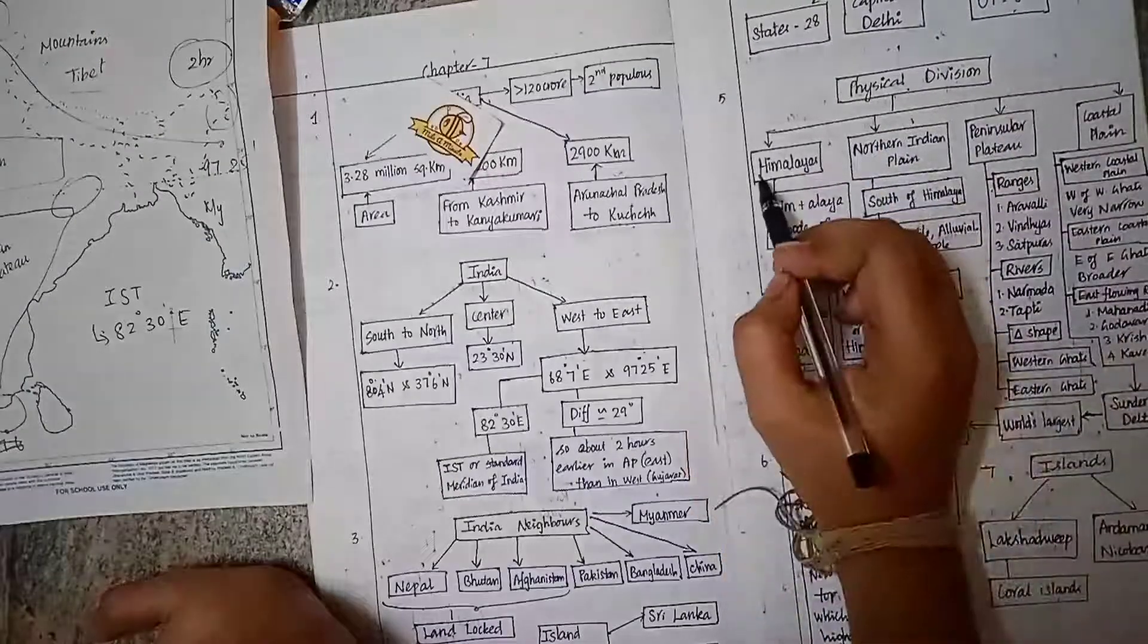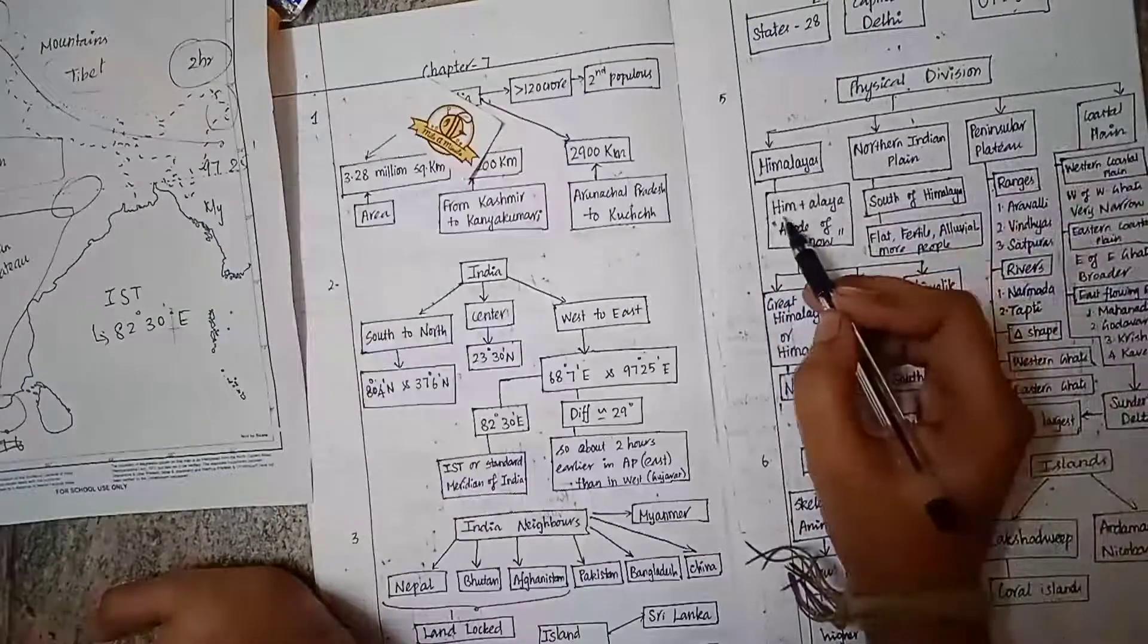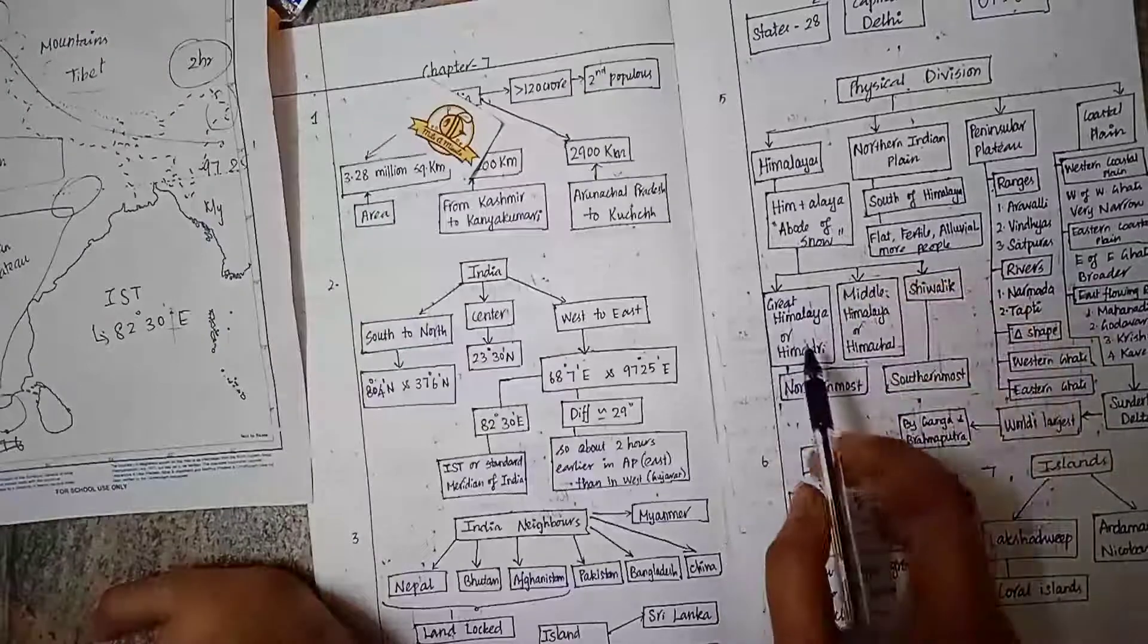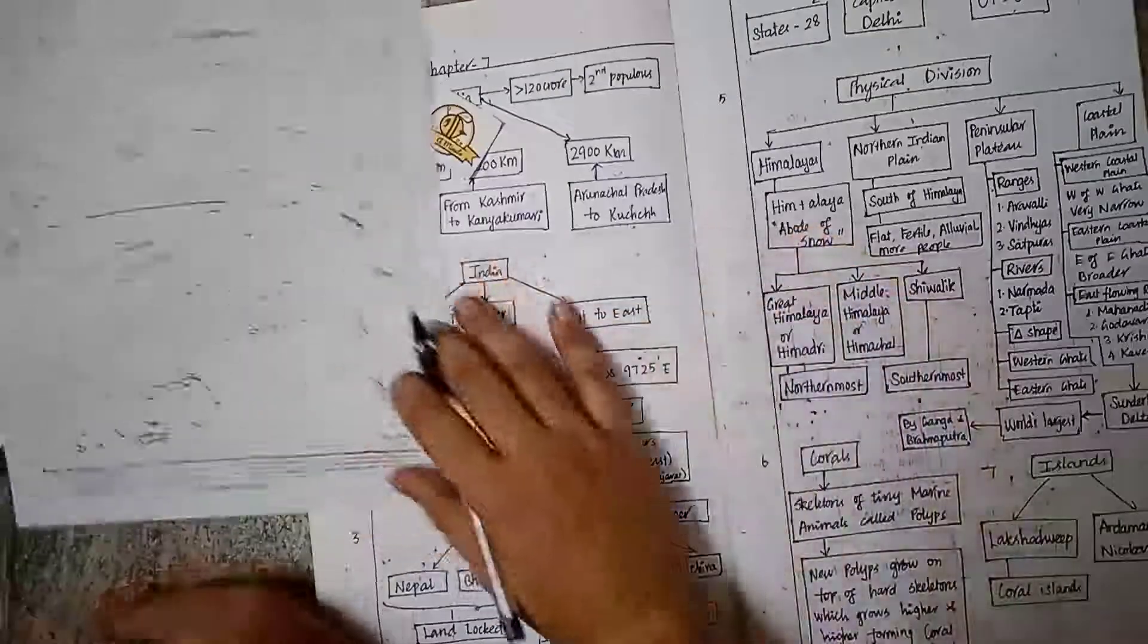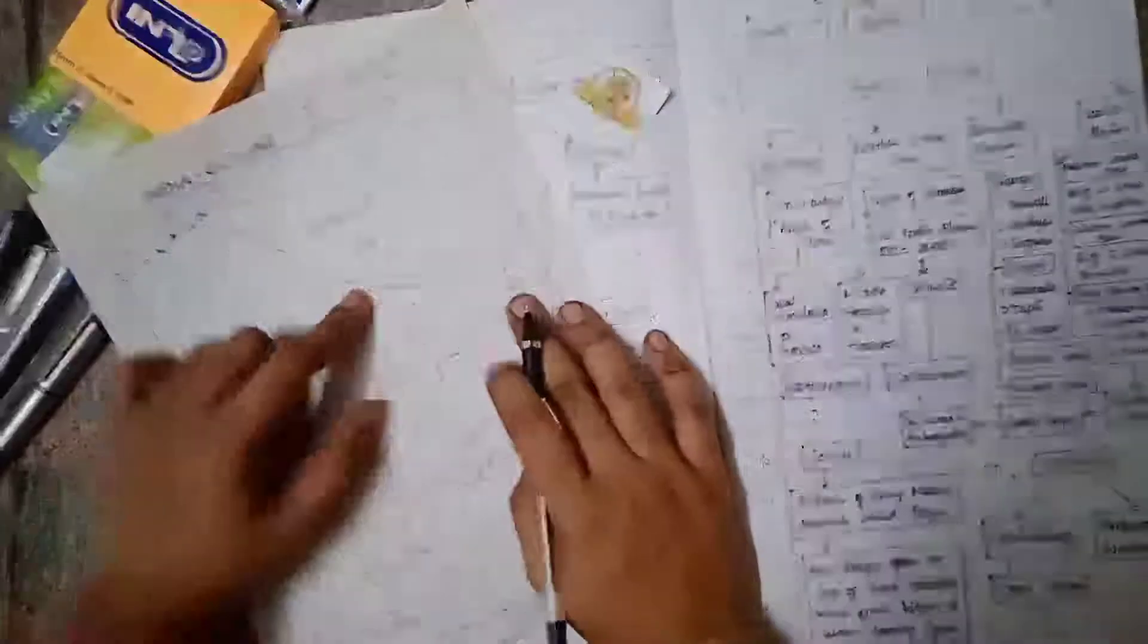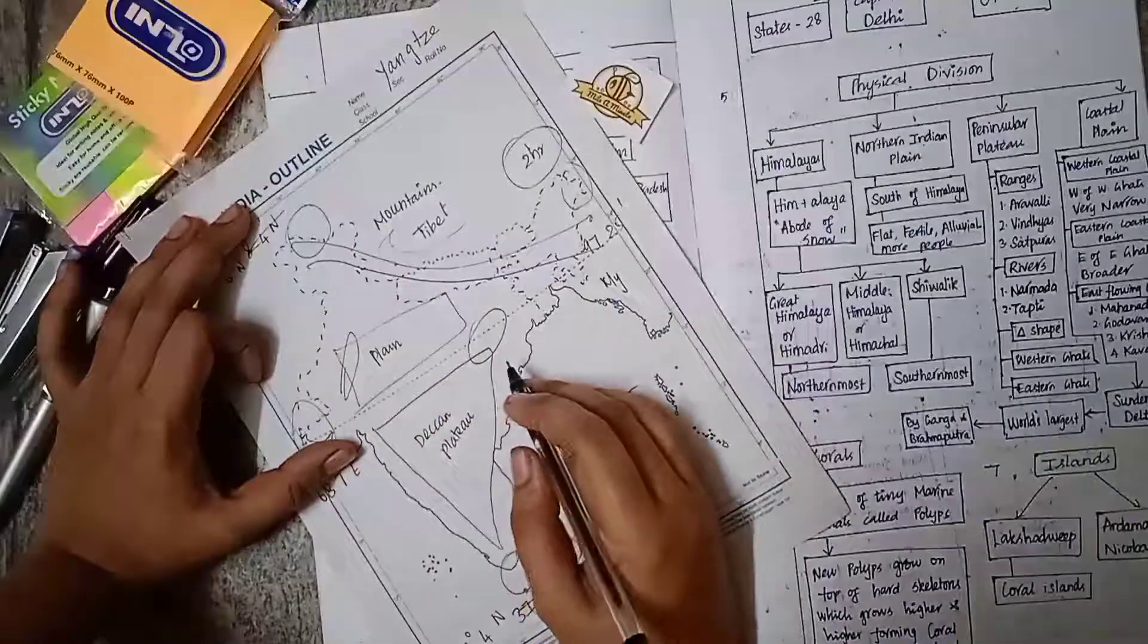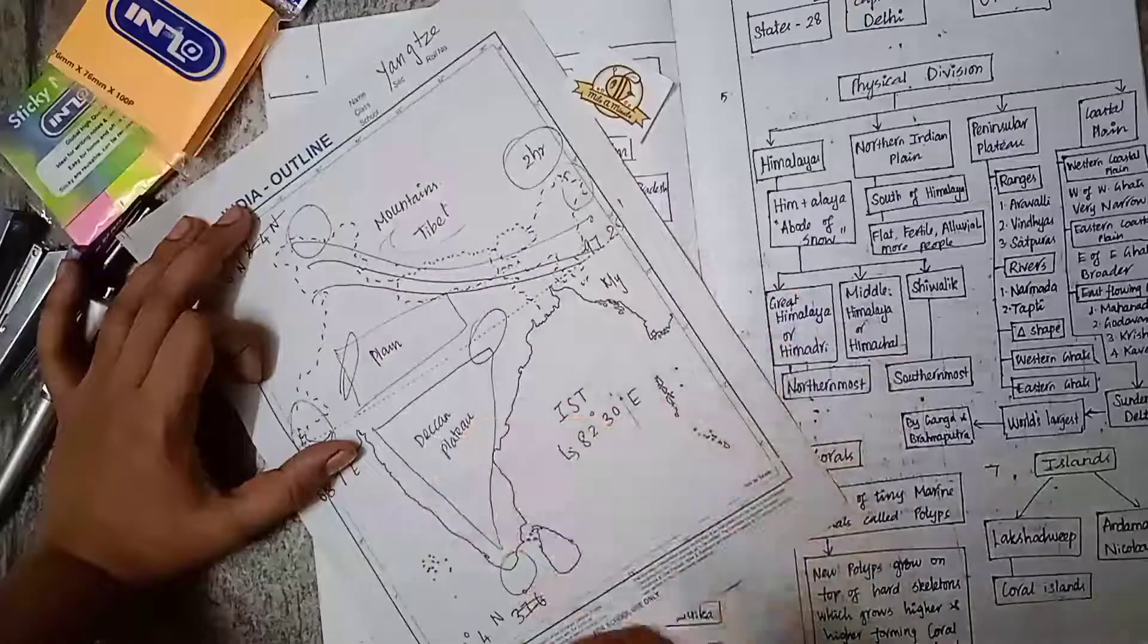The physical divisions include Himalayas, Northern Indian Plain, Peninsular Plateau, and Coastal Plains. Himalaya means Him plus Alaya, abode of snow. The Himalayas are divided into Greater Himalaya or Himadri located northernmost, Middle Himalayas or Himachal, and Shivalik which is the southernmost.